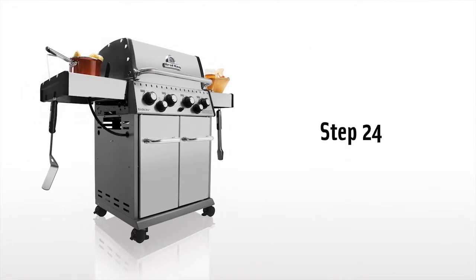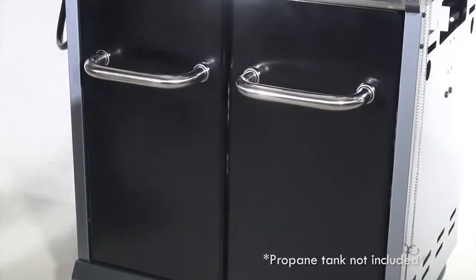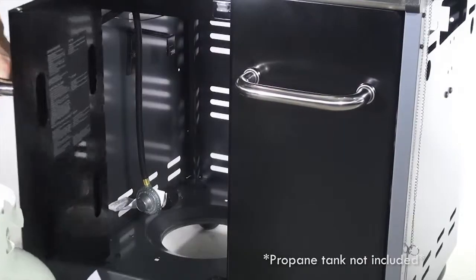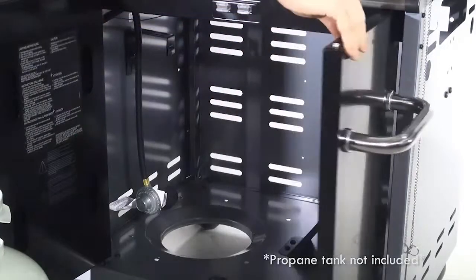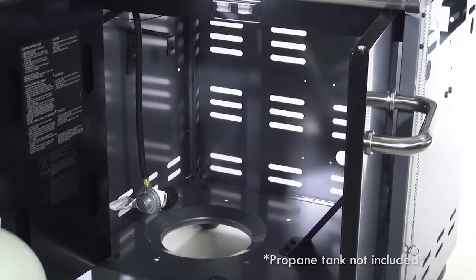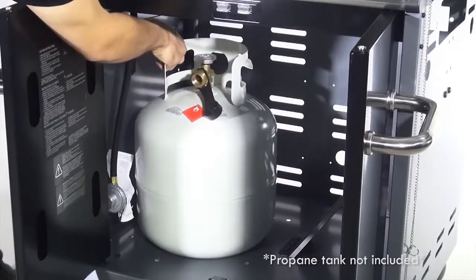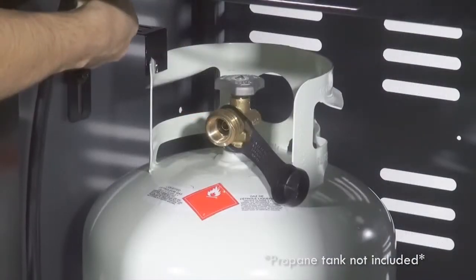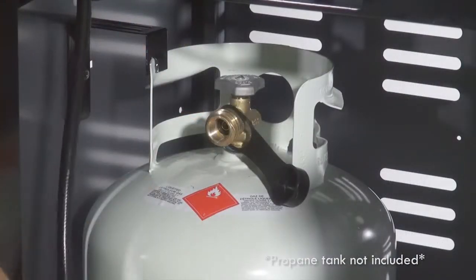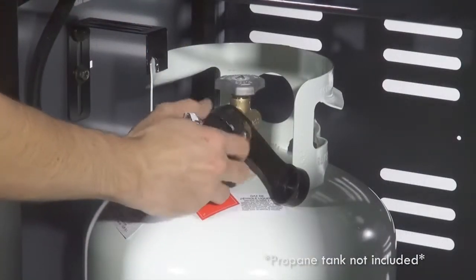Step 24. Install the propane tank in your barbecue grill. Secure using the tank bracket assembly. Now attach the hose and regulator.